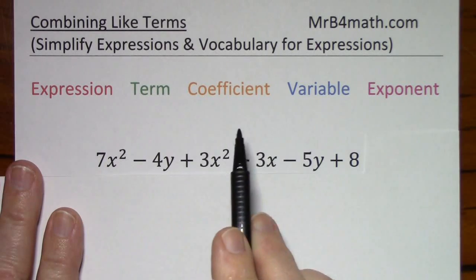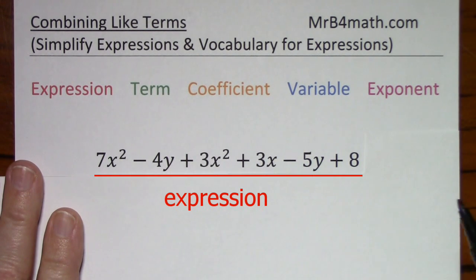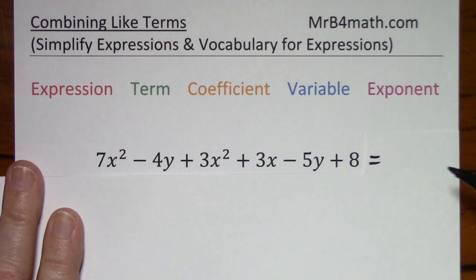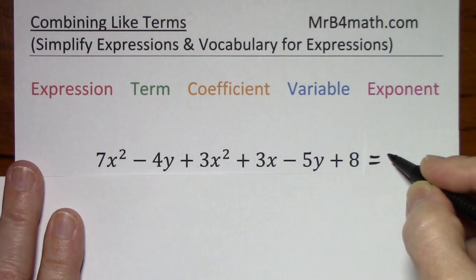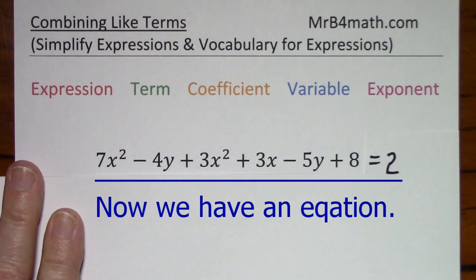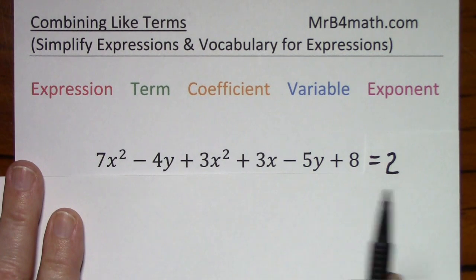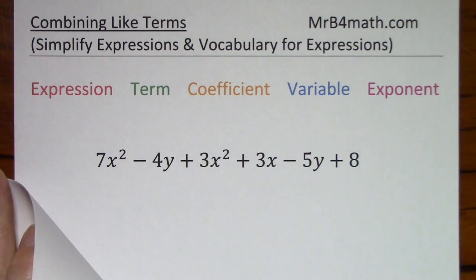Before I get started defining these five terms, I want to describe the difference between an expression and an equation. Presently, this is an expression. If I put in an equal sign, I still don't have an equation because there's just an error on the other side. But as soon as I have a number or a variable — let's say 2 — now we have an equation. With an equation, you can try to solve for x or y if you get one variable all by itself. But with an expression, there's no way to try to solve for x or y.